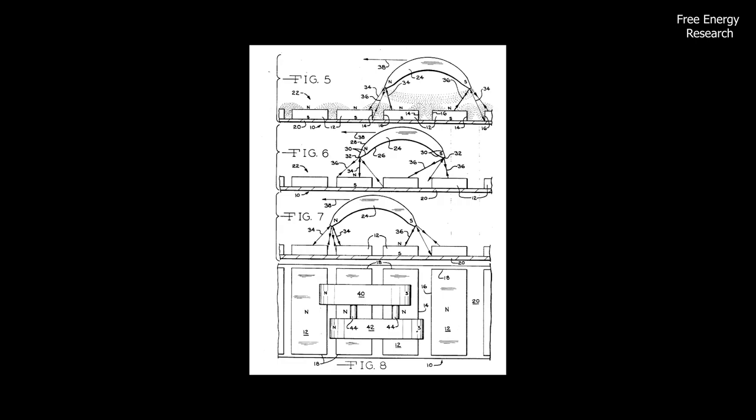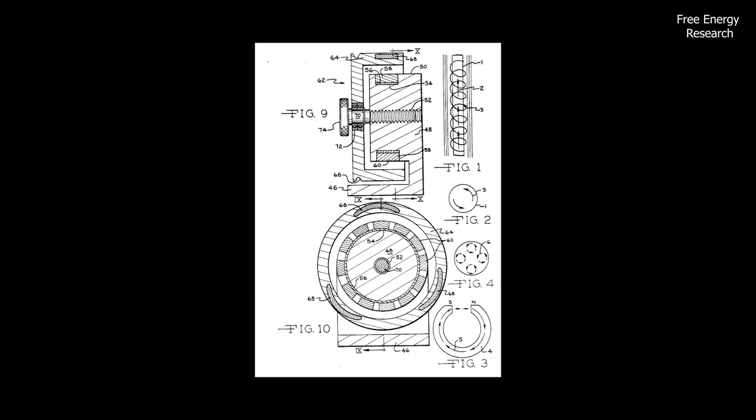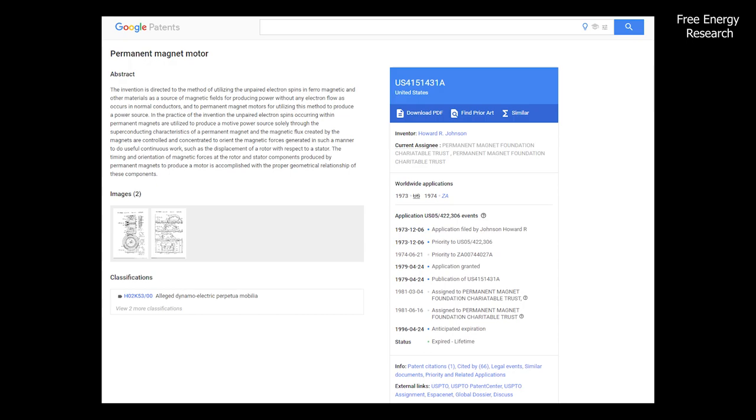Johnson's motor design incorporated a unique arrangement of magnets, which he claimed could produce more energy than it consumed, violating the principles of thermodynamics. This assertion generated considerable interest and controversy within the scientific community.